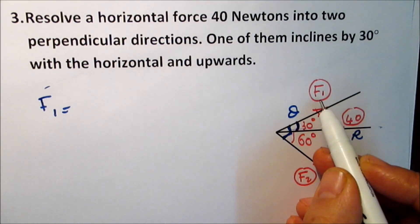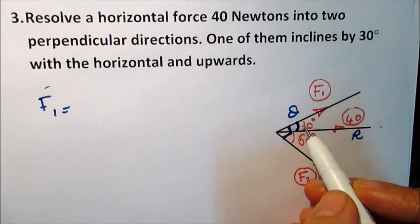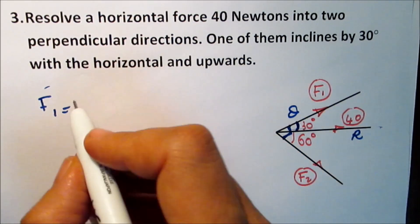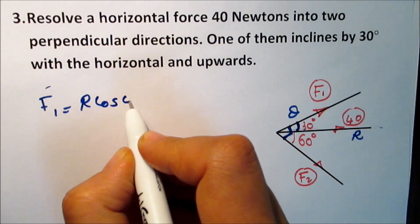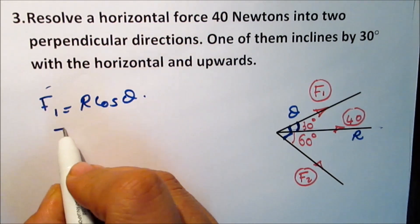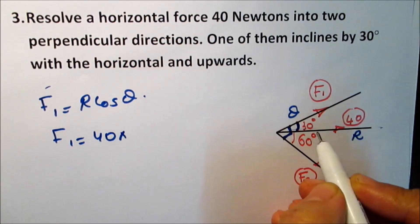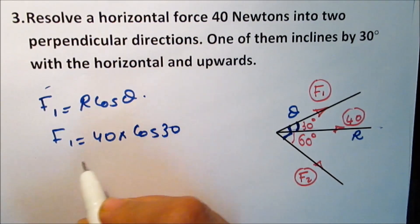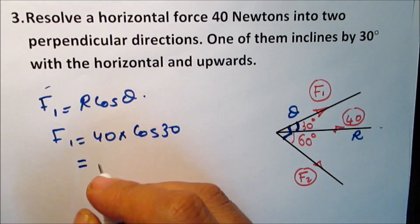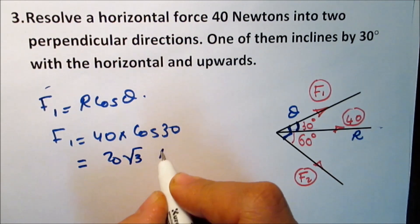Assume theta is the angle adjacent to F1. So F1 equals R·cosine(theta), which gives F1 equals 40·cosine(30) = 20√3 newtons.